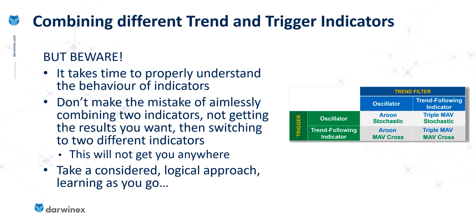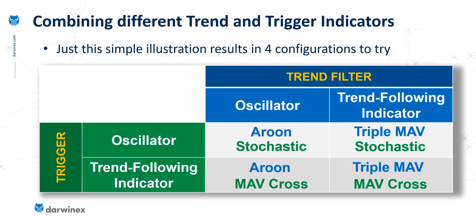In terms of the combinations available to exploit the edge you're targeting, there are probably endless combinations. I'm aware of around 10 or 11 trend indicators that could be used, and in terms of trigger indicators you're into the hundreds or thousands — far more combinations than you could ever attempt to test. Which is why you need to focus your efforts on those most likely to enable you to exploit your edge. So in terms of practicalities, I'm going to focus on the triple moving average and the stochastic for the trigger.